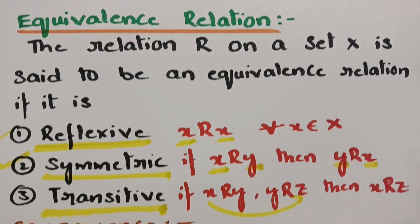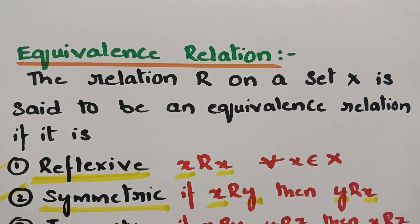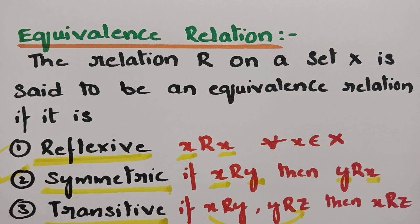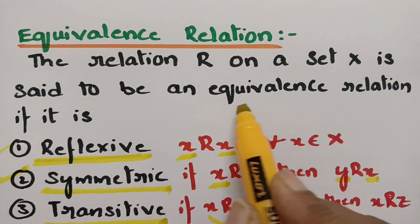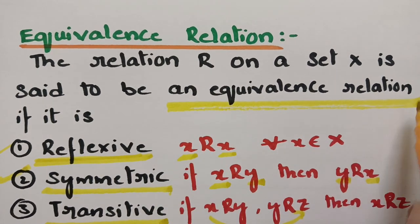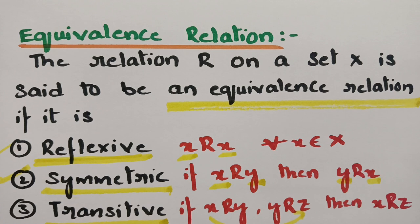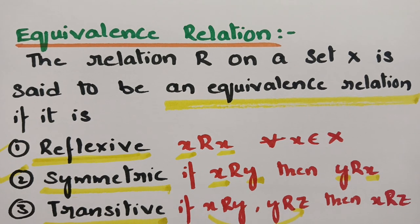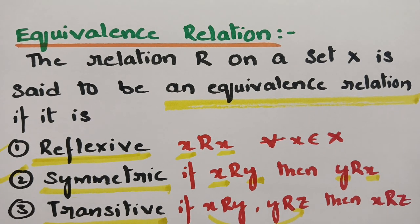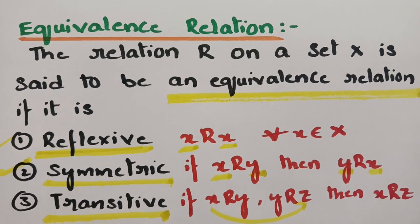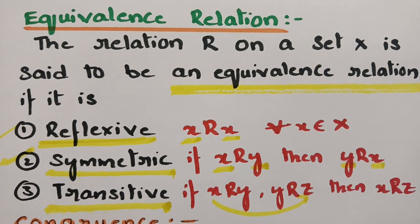If all three properties hold — that is, reflexive, symmetric and transitive — then that relation is called an equivalence relation. So, an equivalence relation requires all three properties: reflexive, symmetric and transitive.